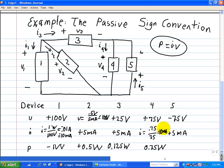And then finally, for device 5, we have negative 75 volts times 5 milliamps. And that turns out to be negative 0.375 watts.